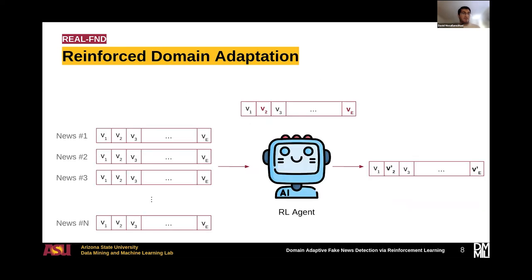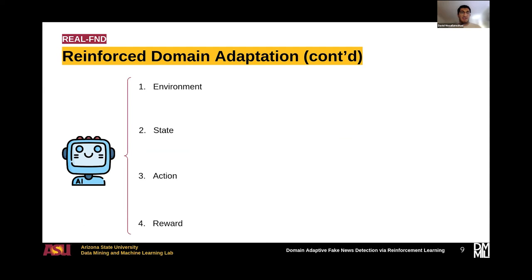Next, I'll introduce the reinforced domain adaptation component. Its goal is to modify every news representation to make it domain-adaptive — specifically, to remove domain-dependent features from the news representation learned in the previous step by the news article encoder. To define a reinforcement learning agent, we need the following terms: environment, state, action, and the reward function, which is the most important one.